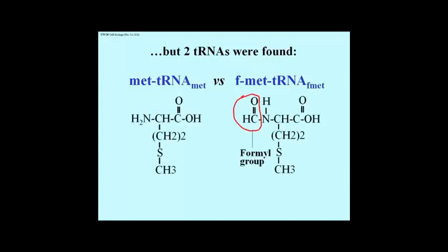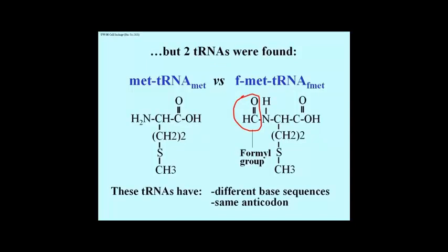Here we have them drawn out. I'm showing you methionine with a formyl group circled on the formyl methionine. These were then acylated to their respective tRNAs. The tRNAs were isolated, purified, and actually sequenced. tRNAs are relatively short — 70 to 80 or so bases long — and were the first nucleic acids to be sequenced. In the mid-60s it was quite a feat to sequence actual RNA molecules. tRNAs were sequenced in part because they were short, and in part because they have a lot of base modifications, which made chemical sequencing a bit easier.